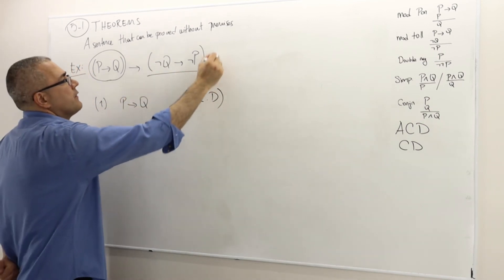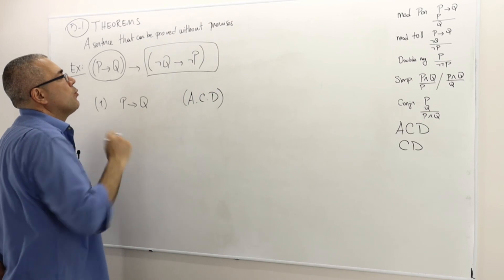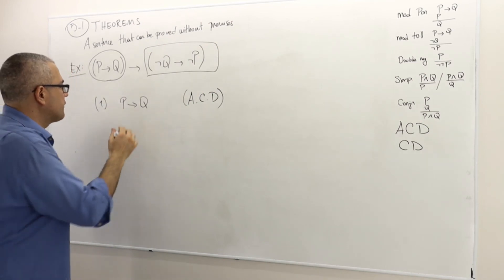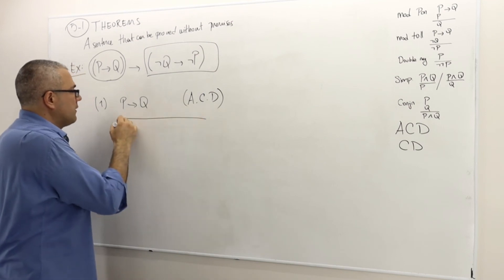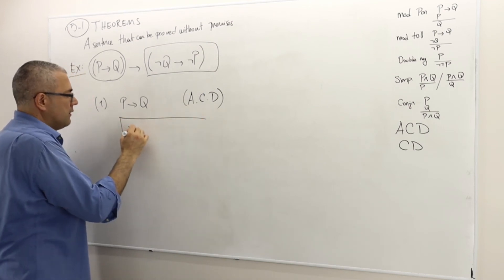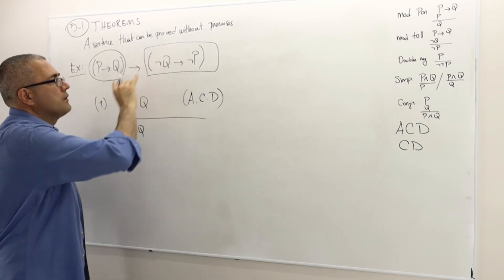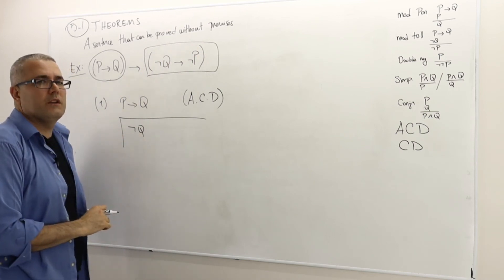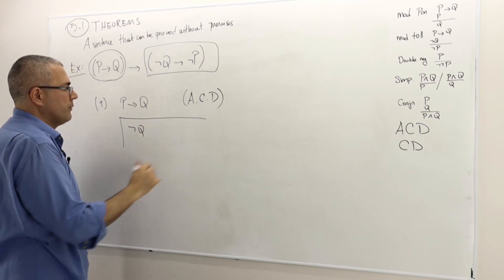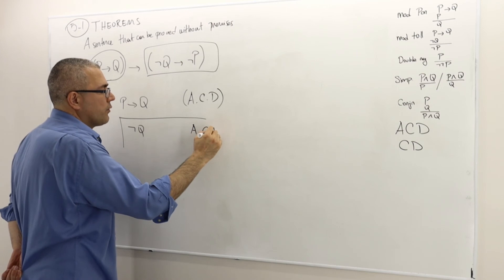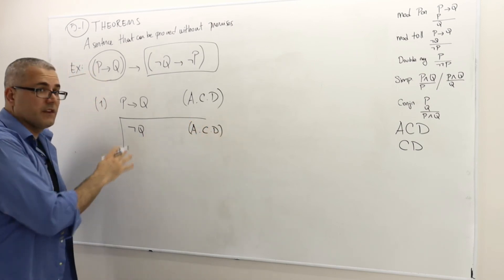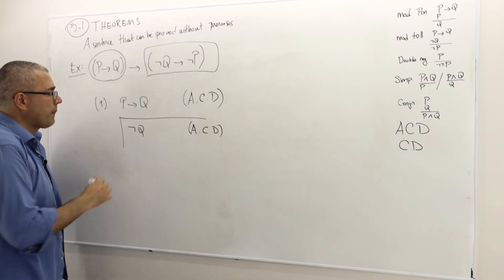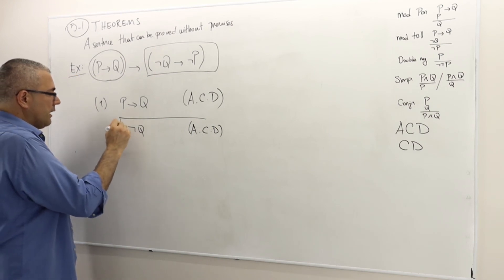Now I want to show this next part, which is another conditional sentence. So I start by assuming not Q, because if not Q is false, the statement is true anyway. Suppose not Q is true — this is the assumption for conditional derivation. This is a sub-proof of the theorem, and this is line 2.